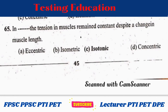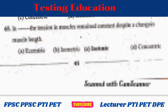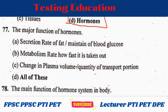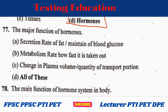When the tension in the muscle remains constant despite a change in muscle length, that is Isometric. Chemicals released by cells that affect cells in other parts of the body are Hormones. The major functions of hormones are: secretion rate of fat, maintenance of blood glucose, metabolism rate, rate of uptake, change in plasma volume, quantity of transport proteins — all of these.